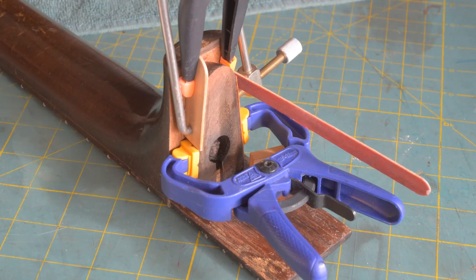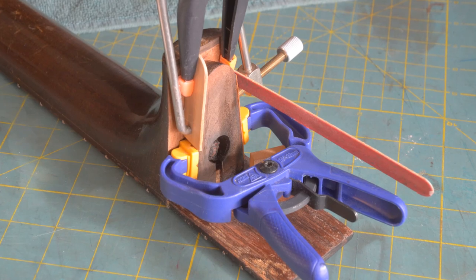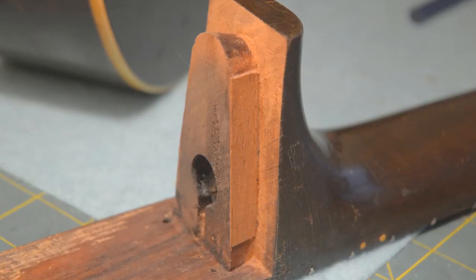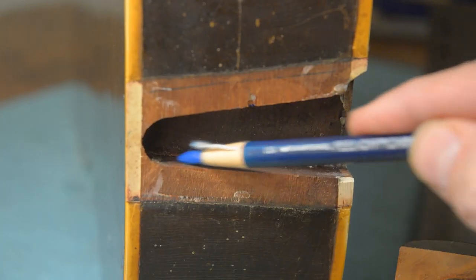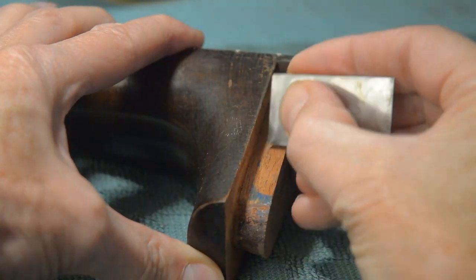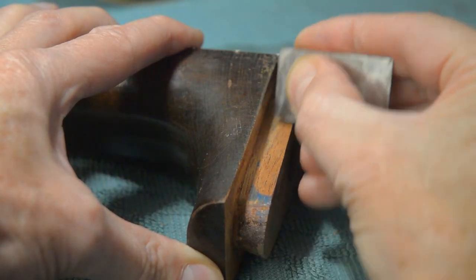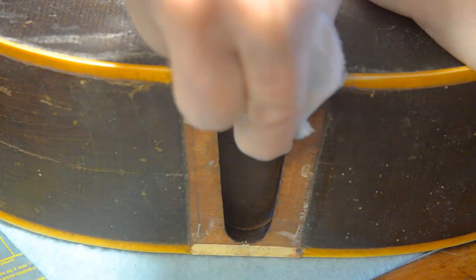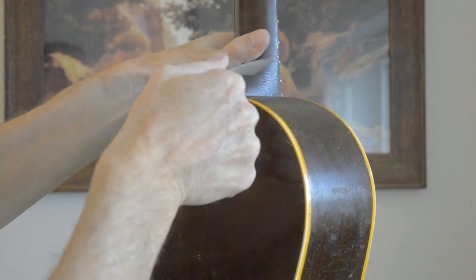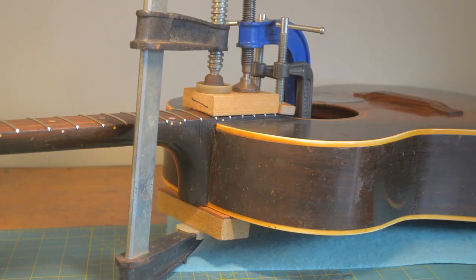I have to glue mahogany shims onto the dovetail so that I can once again get it to fit tightly. I use a grease pencil so that I can tell where the high points are on the shims. Don't forget to remove the grease pencil or the glue won't work properly. Here I do a final fitting of the neck. And there it is glued in place.